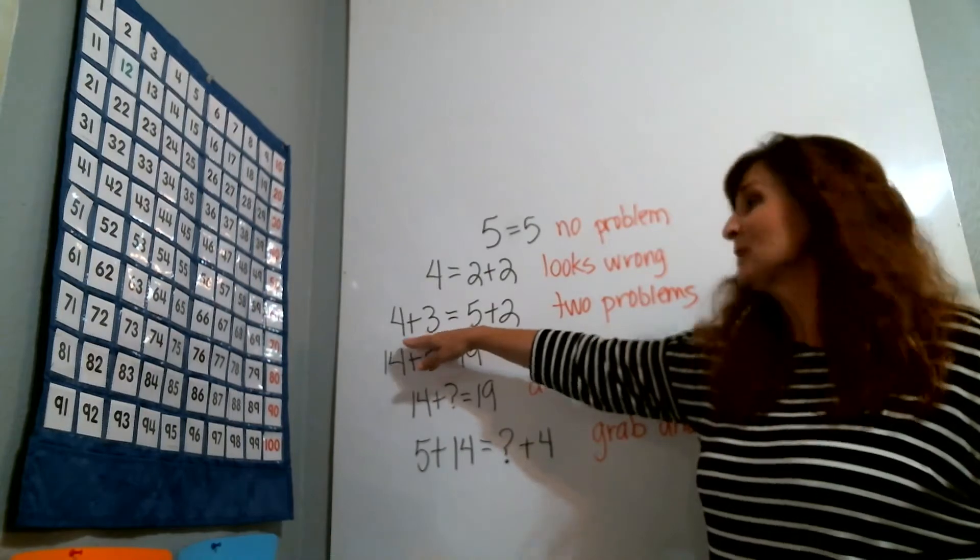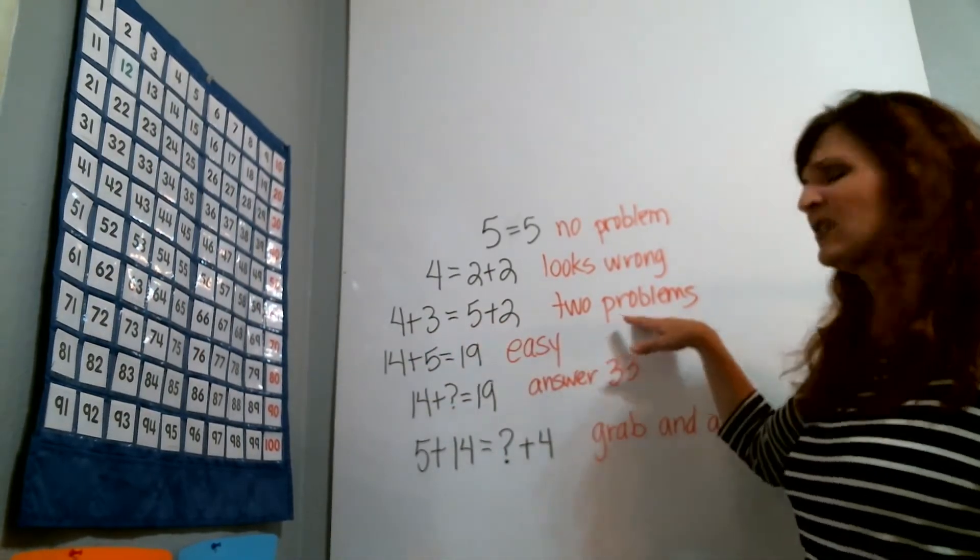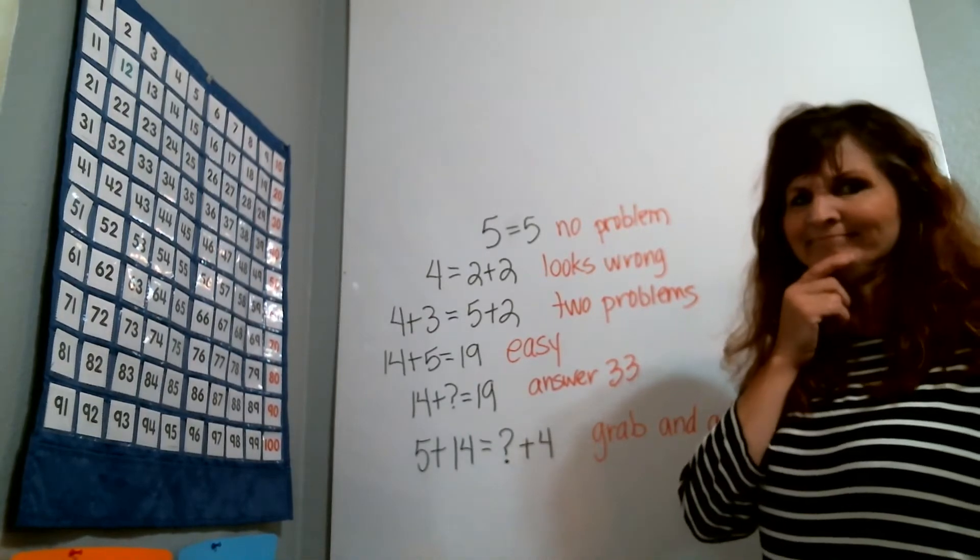If they see something like this, 4 plus 3 is equivalent to 5 plus 2, they say well, there's really two problems there. How can that be?